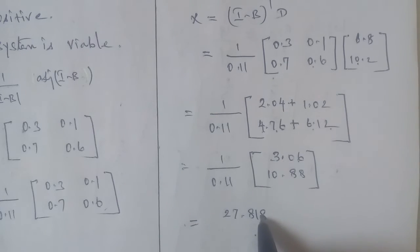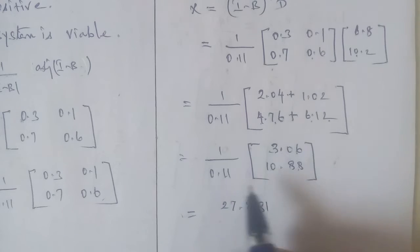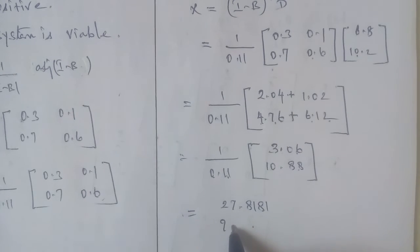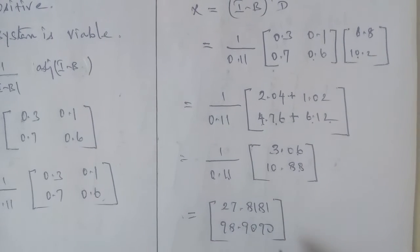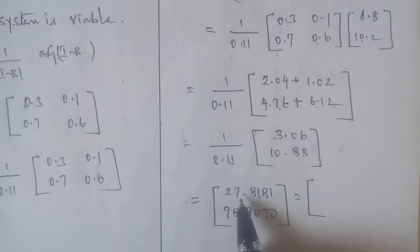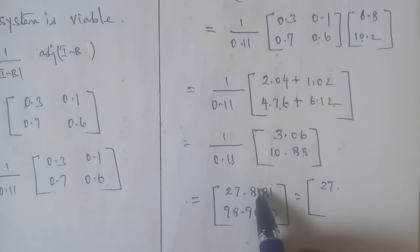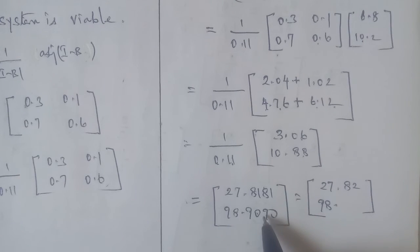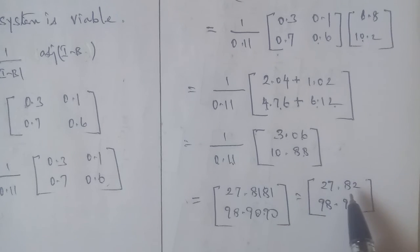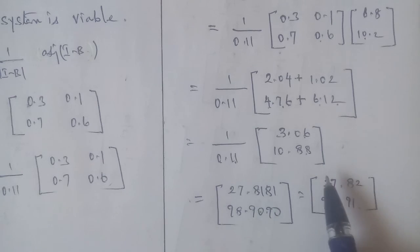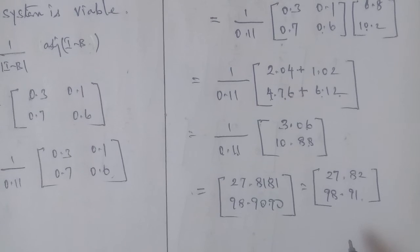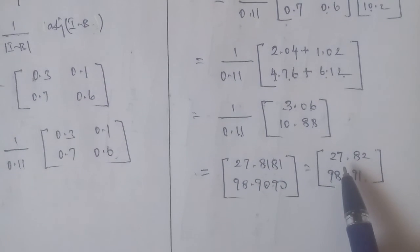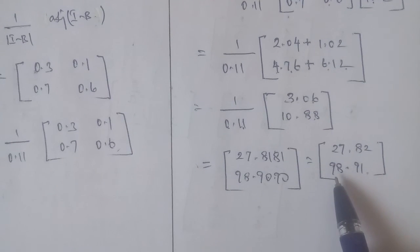Dividing by 0.11: 3.06 / 0.11 ≈ 27.82 and 10.88 / 0.11 ≈ 98.91. So the gross production of commodity A is approximately 27.82 tons and the gross production of commodity B is approximately 98.91 tons.